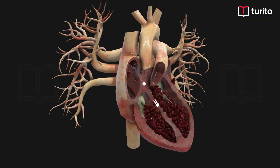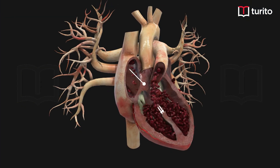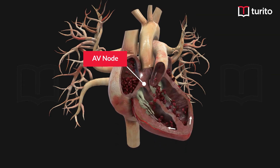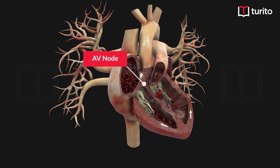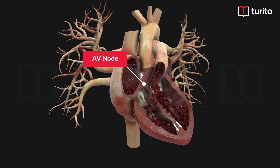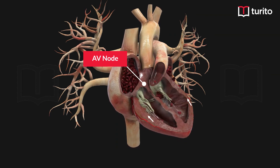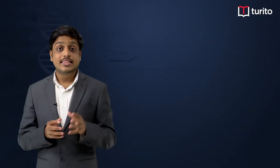Once the blood is flowing into the ventricles, the cardiac impulses also move from the sinoatrial node to the atrioventricular node, and then pass down the ventricles through the bundle of His, being distributed to the Purkinje fibers. From the Purkinje fibers, the cardiac impulses are received by the ventricles, and the ventricles start contracting. This marks the beginning of the ventricular systole.